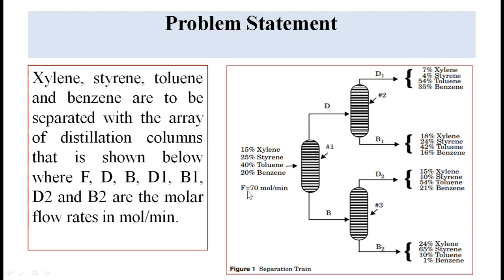The feed flow rate F to column 1 is given as 70 moles per minute, and its composition for the different components — xylene, styrene, toluene and benzene — is also provided. The distillate from the top of column 1 is fed as feed to column 2, giving streams D1 and B1. Similarly, bottoms from column 1 is fed to column 3, giving streams D2 and B2.